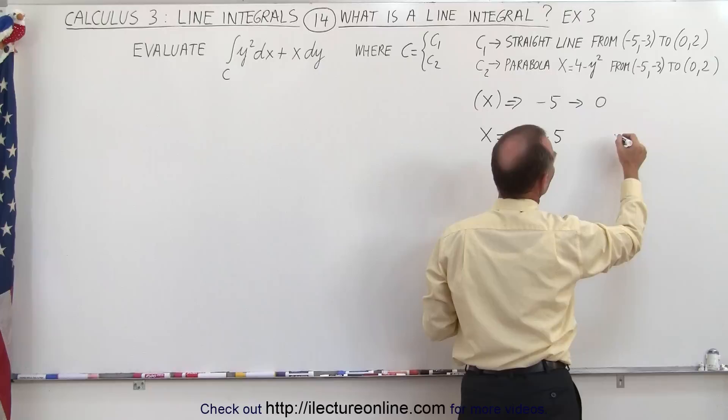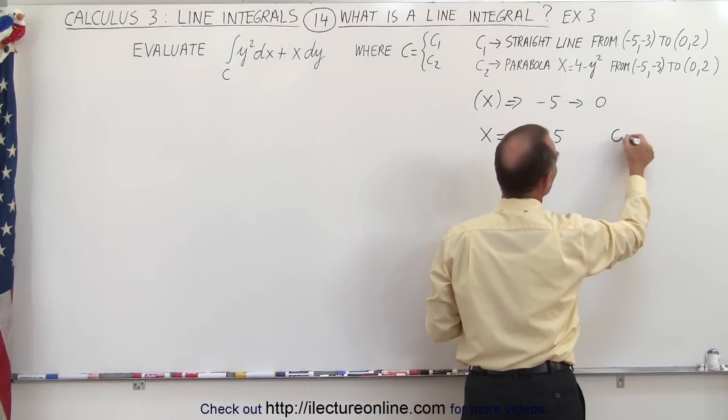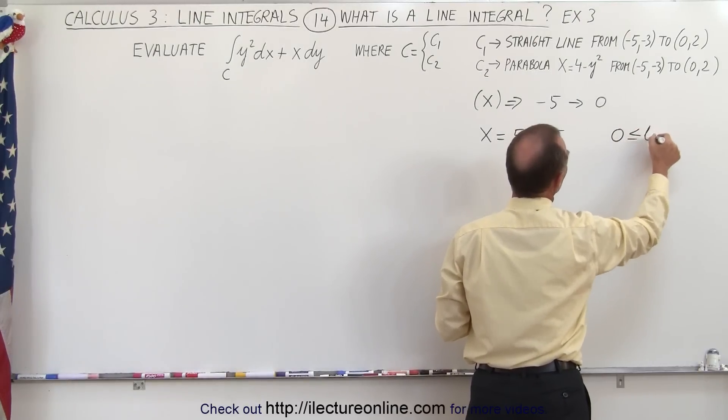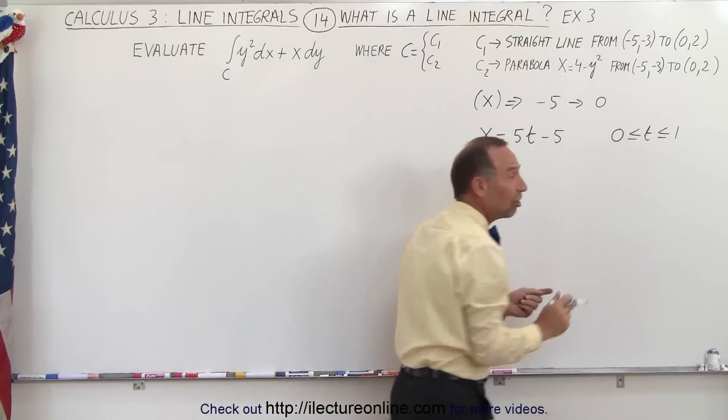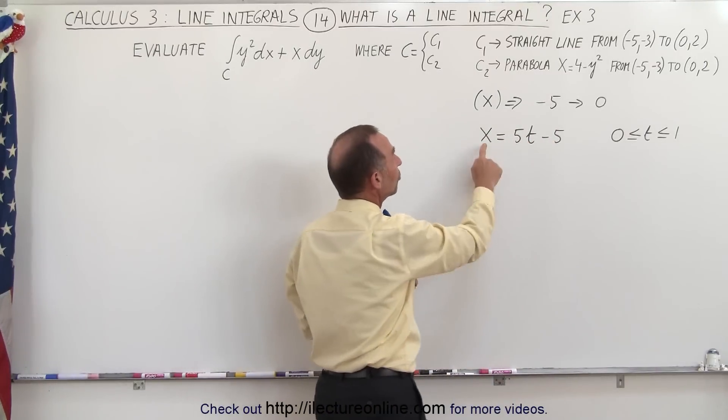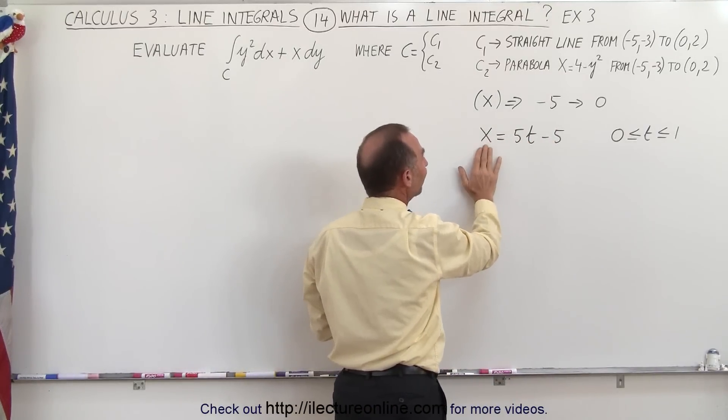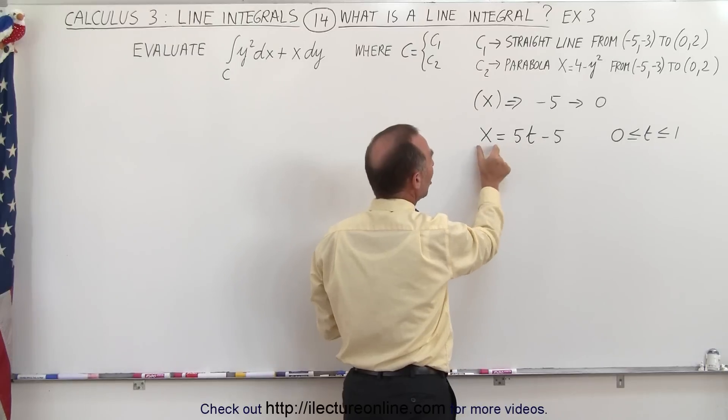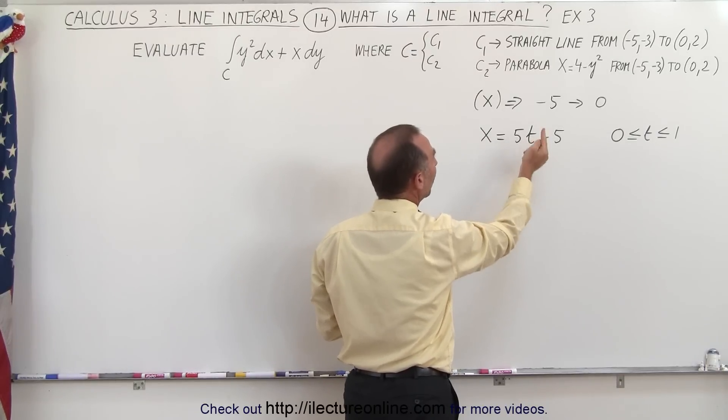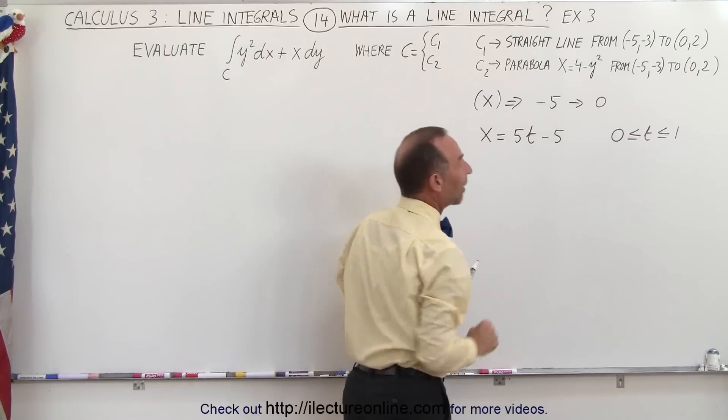The reason why I want to write it like this is because I want to have the limits for t to go from 0 less than equal to t less than equal to 1. So if I want to take a variable that only changes by 1, when my original variable changes by 5, of course I can see that x equals 5 times t, because the change in x is 5 times as big as the change in t. But when t is equal to 0, x is minus 5, so I need a minus 5 there.